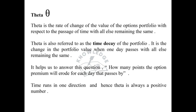The next is Theta. Theta is the rate of change of the value of an option portfolio with respect to the passage of time, with all else remaining the same. Theta is also referred to as the time decay of the portfolio. It is the change in the portfolio value when one day passes with all else remaining the same. It helps us answer the question of how many points the option premium will erode for each day that passes by. The time runs in one direction and hence theta is always a positive number.